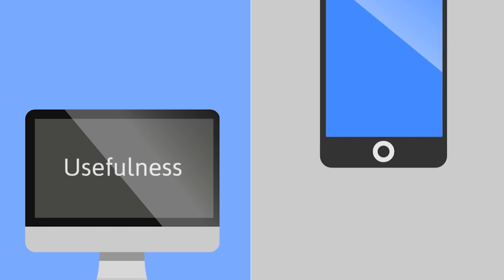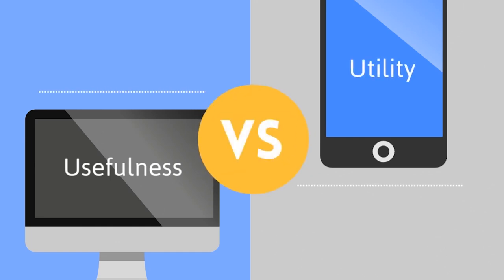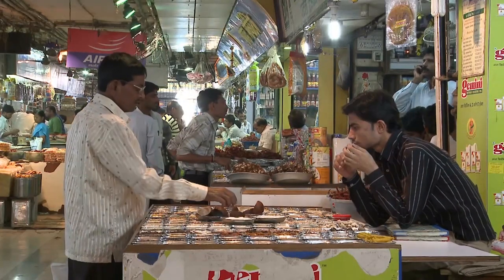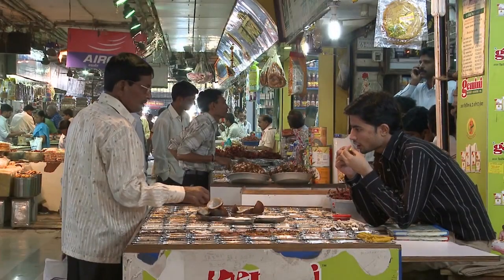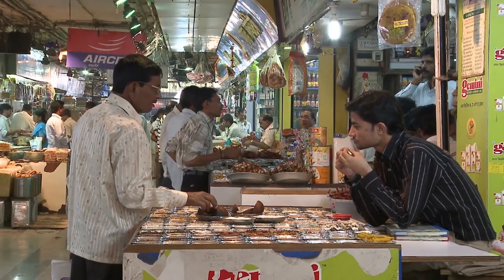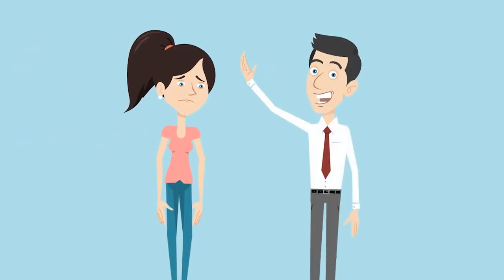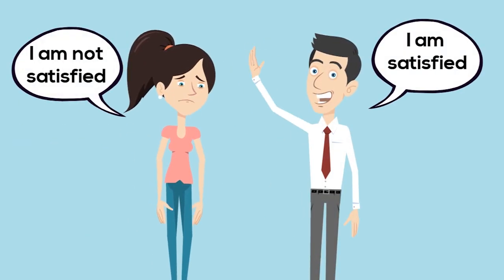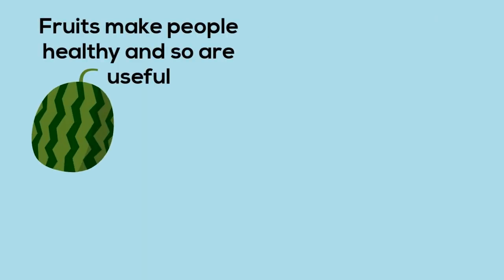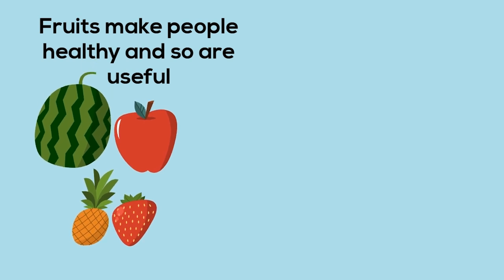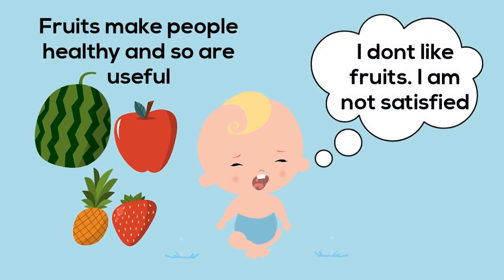In your day-to-day life, you buy a large number of goods. Some goods may be useful for you, while others may not be useful for you. What gives you satisfaction may not give satisfaction to others. For example, fruits and vegetables are healthy food for life and hence may be considered as useful for human beings. However, you must have observed that children generally stay away from fruits and vegetables. This means that they do not love to eat them and hence the satisfaction derived from them may be zero or very less for children.